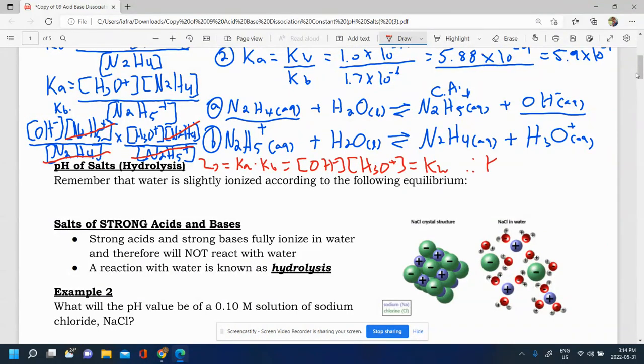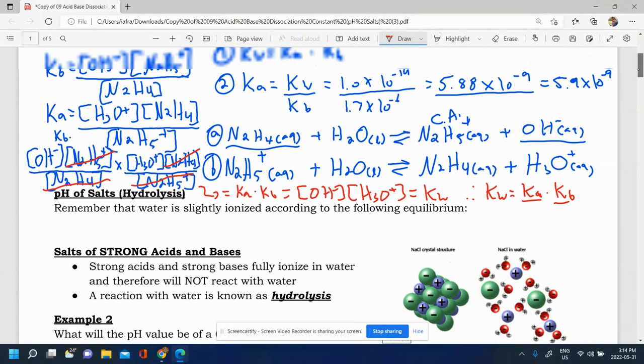Therefore, Kw is equal to Ka times Kb for a conjugate acid base pair. And so that's where that relationship comes from.